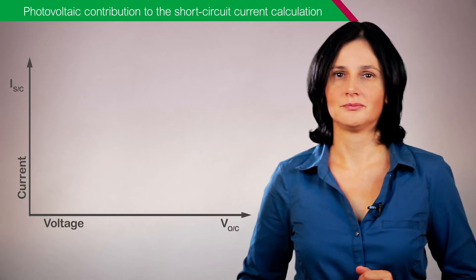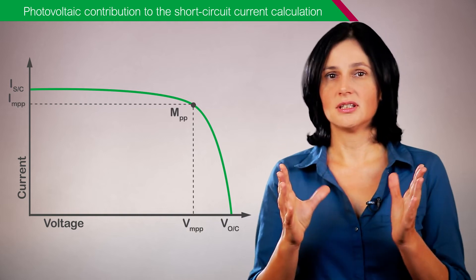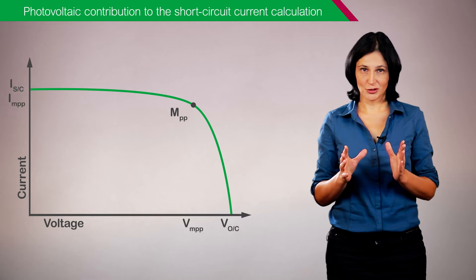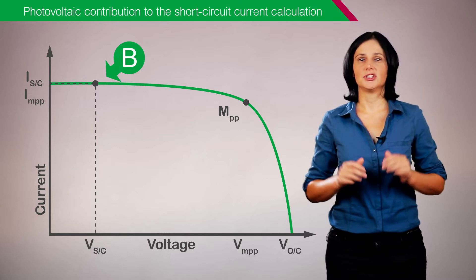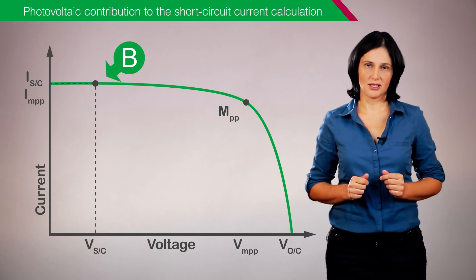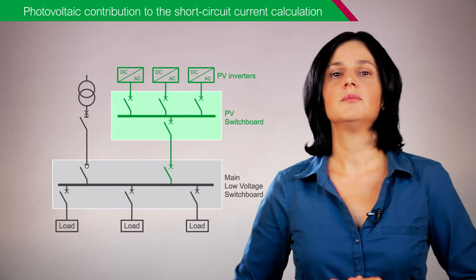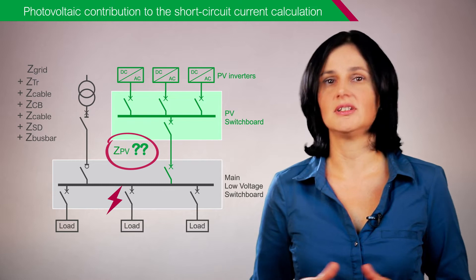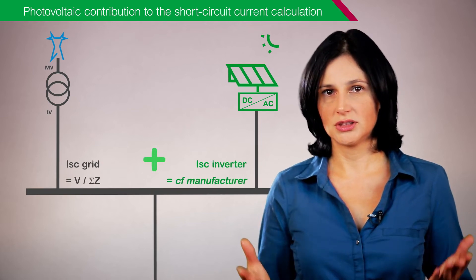Let's look at the second point of consideration: the photovoltaic contribution to the short-circuit currents calculation. The figure here presents the characteristics of a photovoltaic inverter. In normal operating conditions, the inverter delivers a maximum power output, and its voltage and current values correspond to point A. In a short-circuit situation, the inverter output corresponds to point B. Compared to normal operating conditions, the voltage is lower and the current is not much higher due to inverter electronic limitation. No matter the short-circuit impedance, the inverter behaves as a constant current source. Thus, when making short-circuit current calculations, the photovoltaic system should not be represented by impedances, as typically done for all other components of the electrical installation. You have to add the short-circuit contribution of inverters provided by the manufacturer to have the total short-circuit current value of the installation.